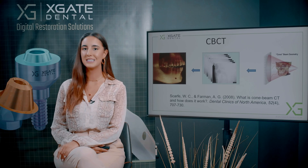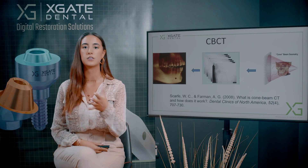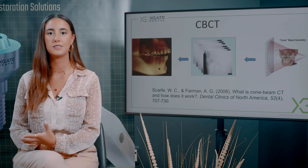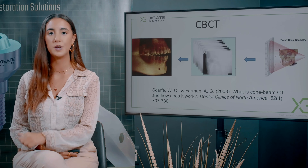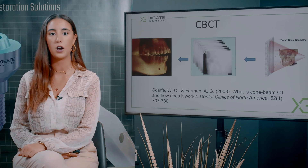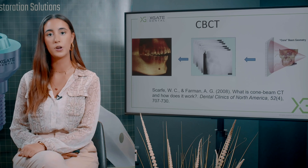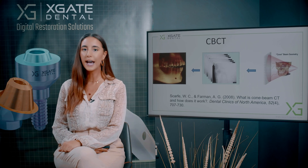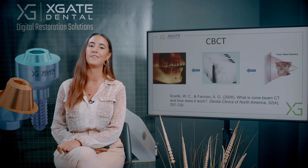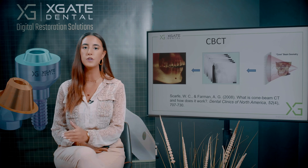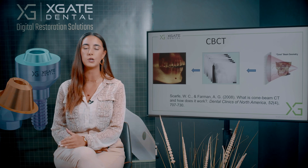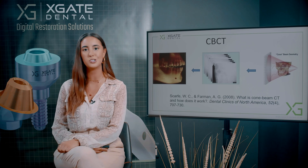In CBCT, the machine makes many slices and the computer collects all of the slices and processes them into a 3D model of the jaw, the bone, and the teeth. You can even have the gingiva and the soft tissues — you can see the nerves and all of the other structures that you need for this procedure.